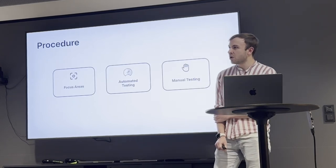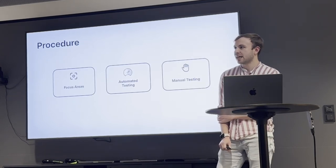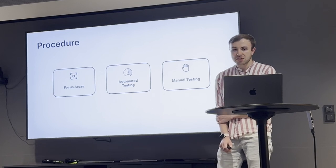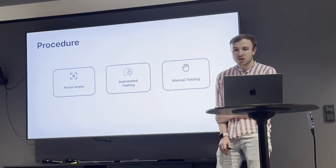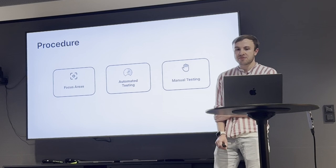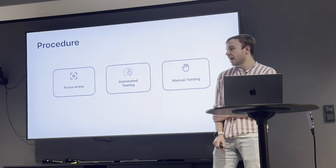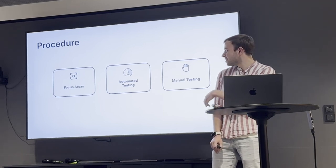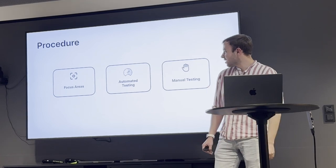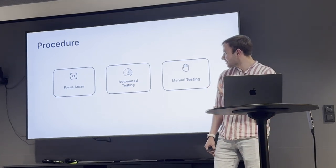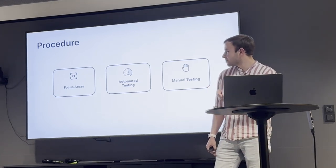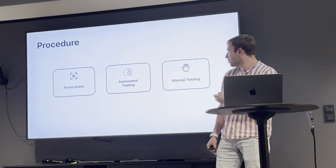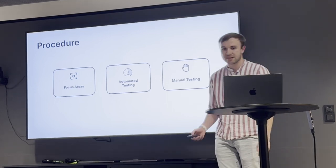So how would you do emergency accessibility debugging? I would suggest three steps: first, identify the focus areas you want to address; then do automated testing; and last but not least, also do some sort of manual testing.